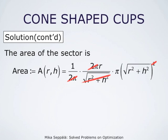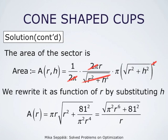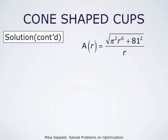This condition came from the known volume of the cone. We substitute that quantity in place of h, and we get that the area as a function of r is pi times r times square root of r squared plus 81 squared divided by pi squared times r to the fourth. A simplification yields that the area is square root of pi squared r to the sixth plus 81 squared, that square root divided by r.